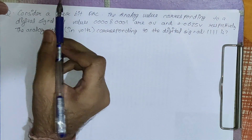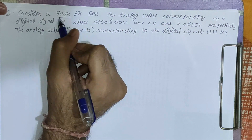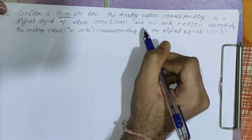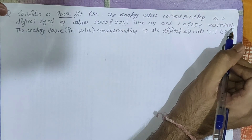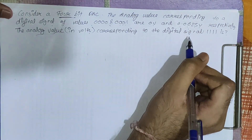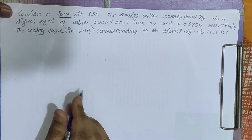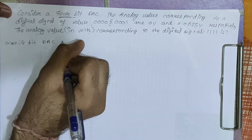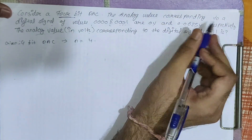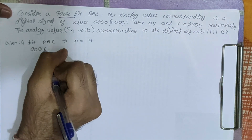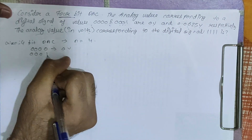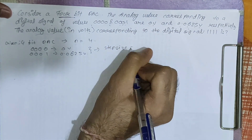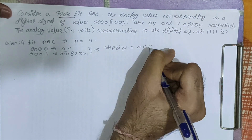Now we will see a sum. Consider a 4-bit DAC. The analog value corresponding to digital signal 0000 and 0001 are 0V and 0.0625V respectively. We need to find the analog value corresponding to digital signal 1111. Given data: N equals 4. Analog value for 0000 is 0V and for 0001 is 0.0625V. From this we can get the step size: step size equals 0.0625 minus 0, which is 0.0625V.